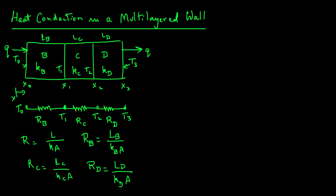And also recall from our previous module that the Q value through a wall is Q equals the temperature difference divided by the thermal resistance. So we can go ahead now and add all these thermal resistance values to get our total resistance. So the total resistance is LB over KB A plus LC over KC A plus LD over KD A.